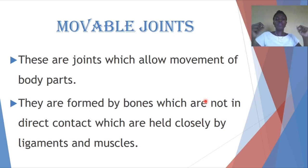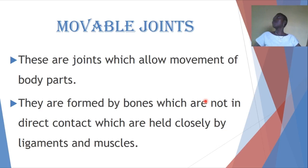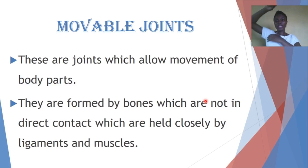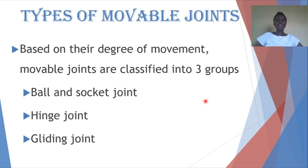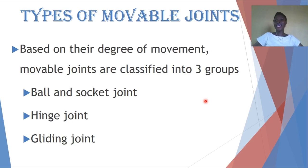Not every part of your body can move as freely as another. The degree of movement you have in your fingers is not the same as what you have in your neck, and not the same as what you have in your waist region. Based on their degree of movement, movable joints are classified into three groups: the ball and socket joint, the hinge joint, and the gliding joint.